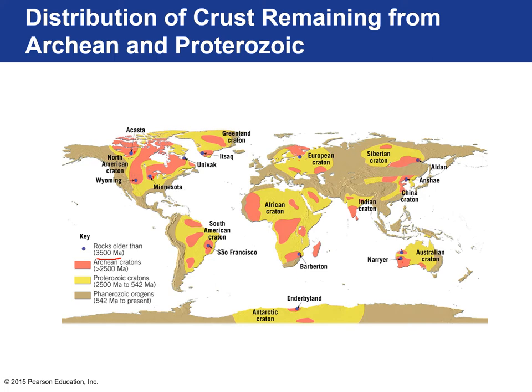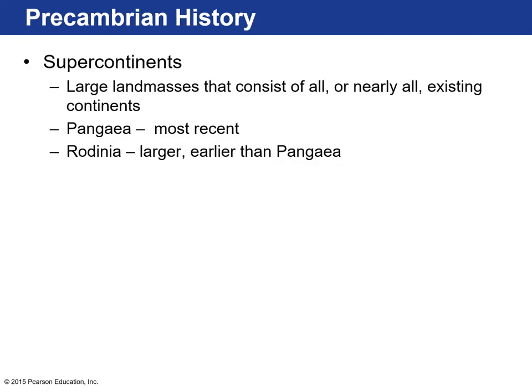Slightly younger Archean rocks or cratons are shown in salmon color on the map. Proterozoic rocks — 2.5 billion years to 542 million years — are shown in yellow. A lot of this old continental crust still exists today and comprises a lot of our continental crust. Everything in tan color is from the Phanerozoic eon, from today back to 542 million years ago.